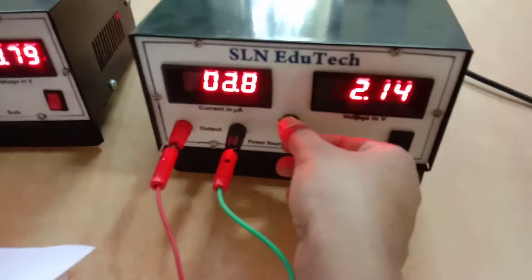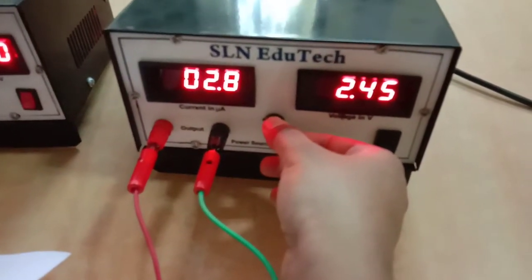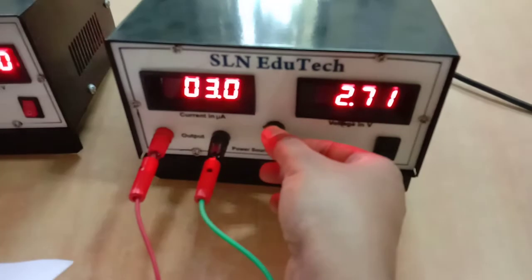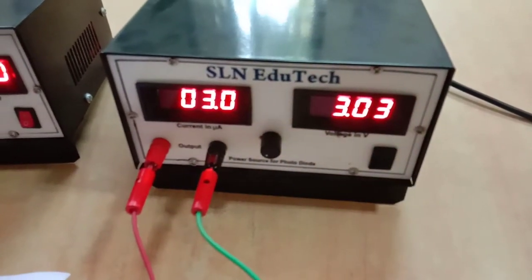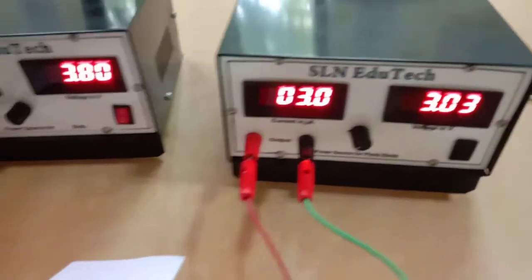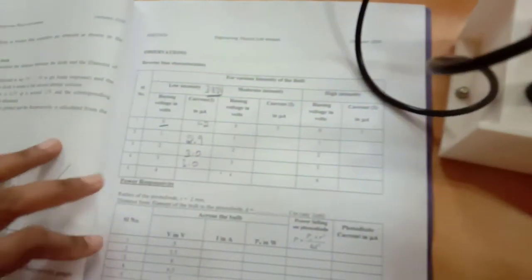Again, if you do one more trial, let me show you that also. Suppose you are keeping biasing voltage across the photodiode, that's the voltage across the photodiode, at 3 volts. It is giving again 3 microamperes.